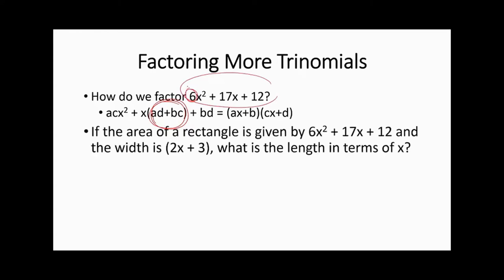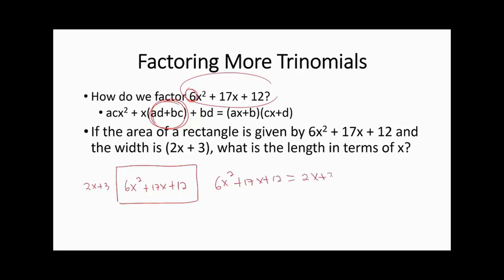Let us look at it in a simpler scenario. If the area of a rectangle is 6x squared plus 17x plus 12, and the width is 2x plus 3, what is the length? We need something that when multiplied by 2 gives 6 — that must be 3x — and something that when multiplied by 3 gives 12 — that must be 4. So the length must be 3x plus 4.